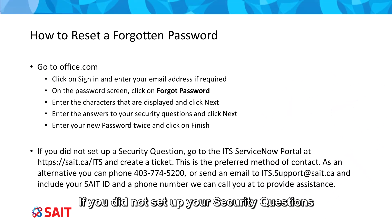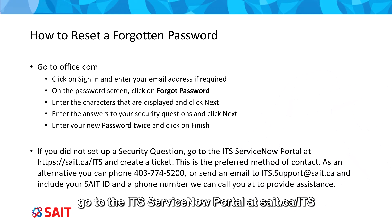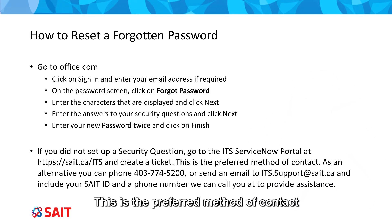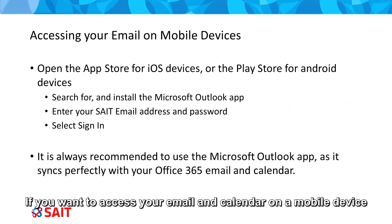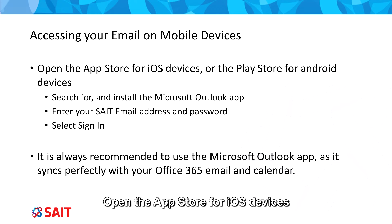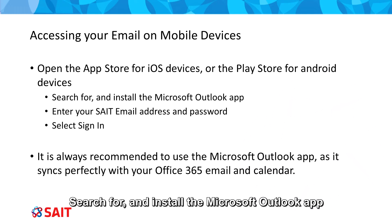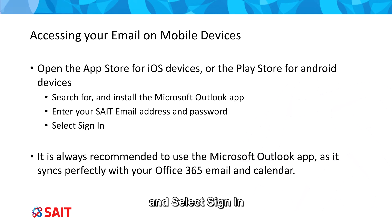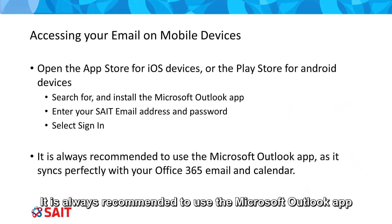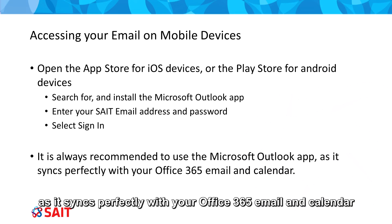If you did not set up your security questions, go to the ITS ServiceNow portal at sait.ca/ITS and create a ticket — this is the preferred method of contact. If you want to access your email and calendar on a mobile device, open the App Store for iOS devices or the Play Store for Android devices. Search for and install the Microsoft Outlook app. When you open the app, enter your SAIT email address and password and select Sign In. It is always recommended to use the Microsoft Outlook app, as it syncs perfectly with your Office 365 email and calendar.